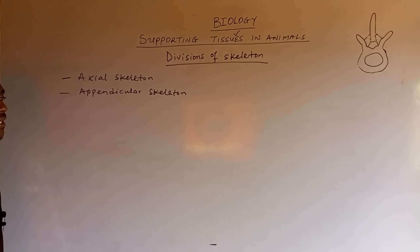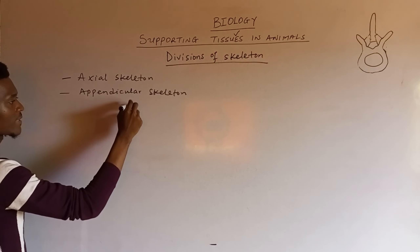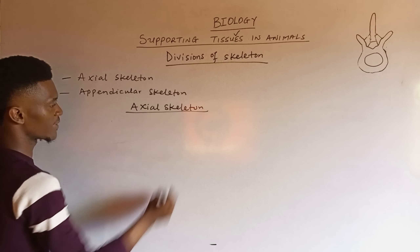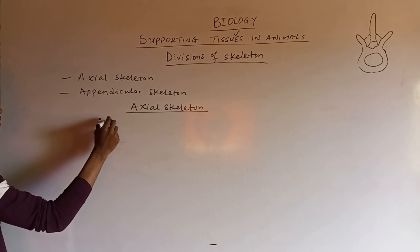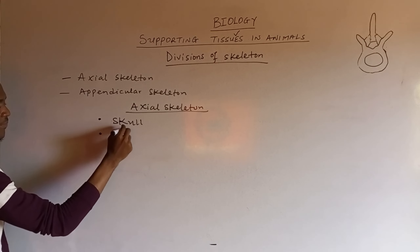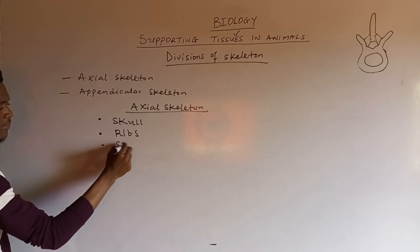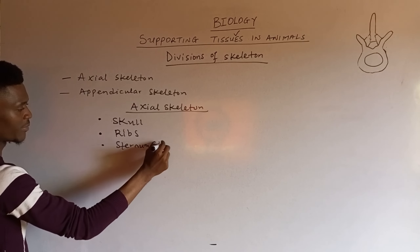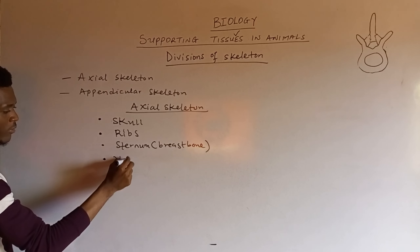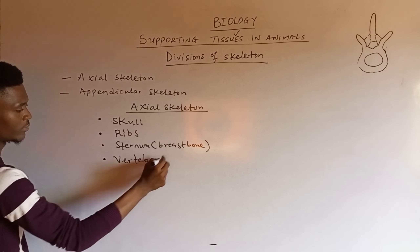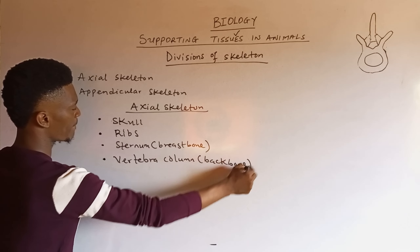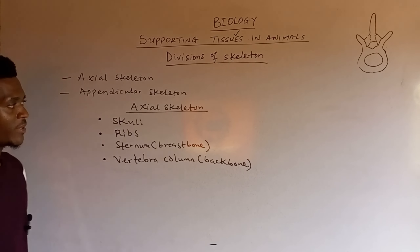The axial skeleton is made up of four different parts: the skull, the ribs, the sternum — which is also called the breast bone — and the vertebral column, which is also called the backbone.